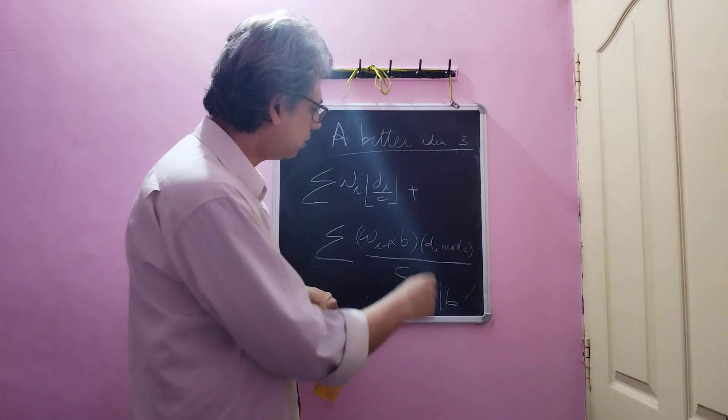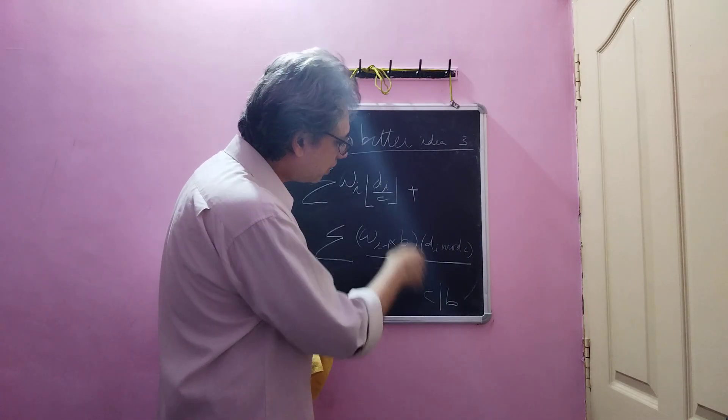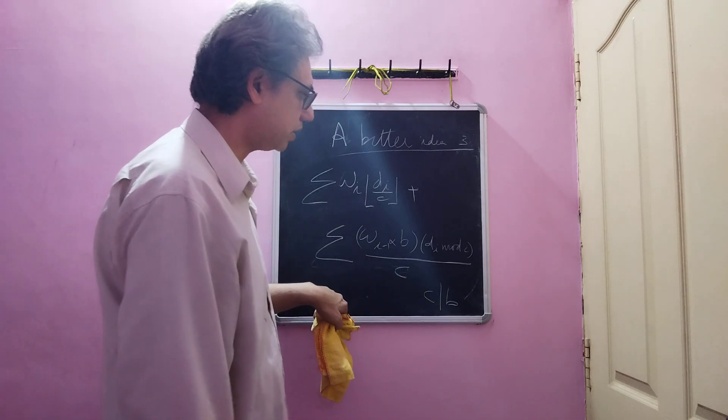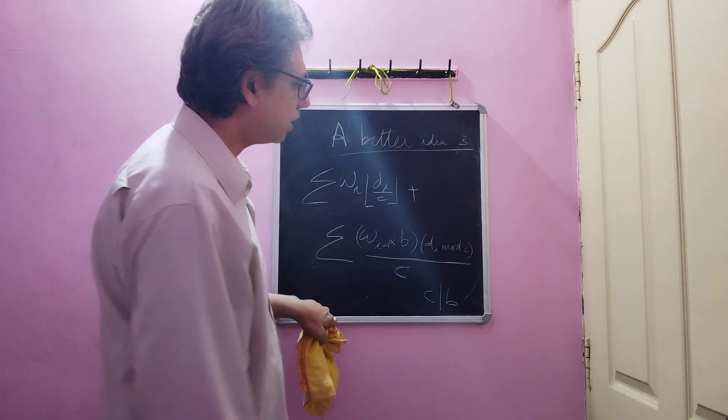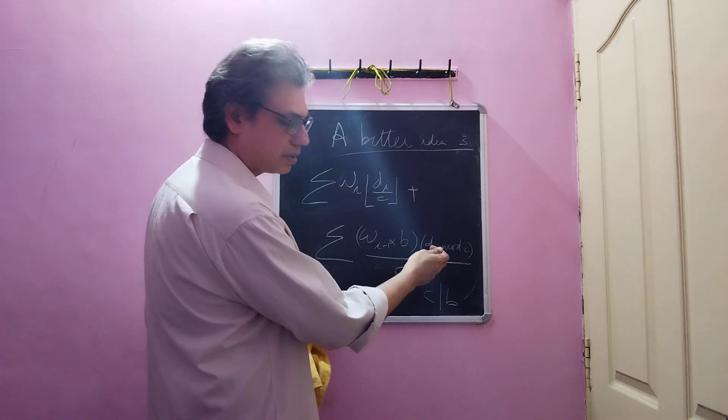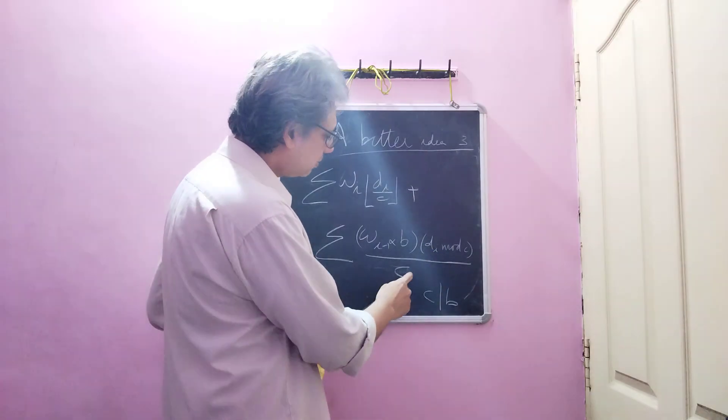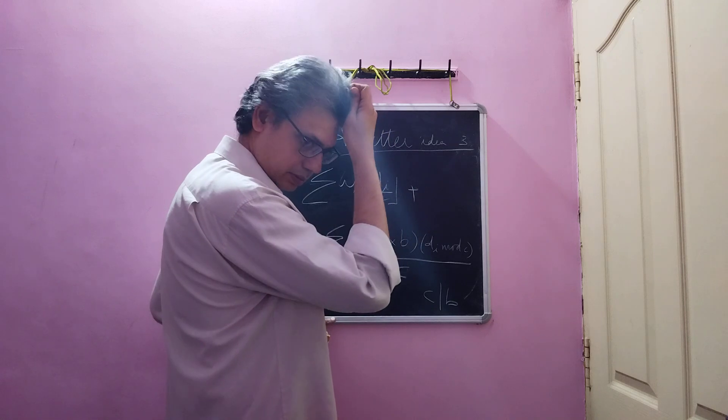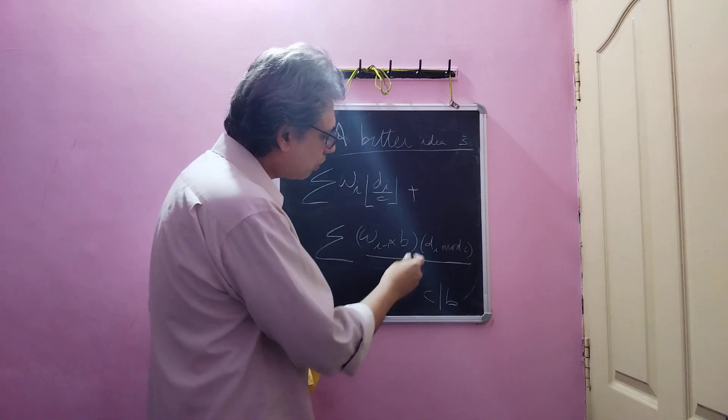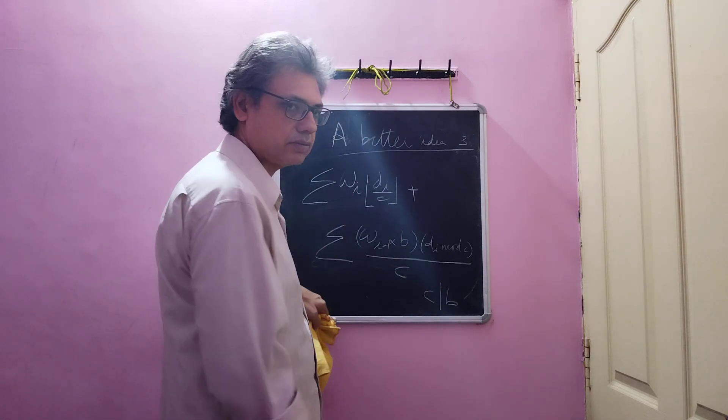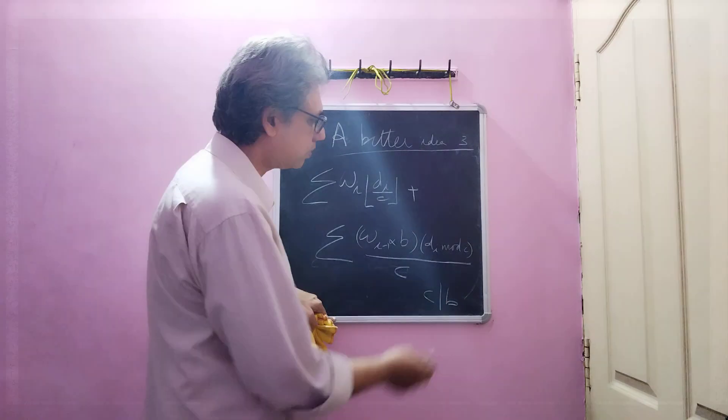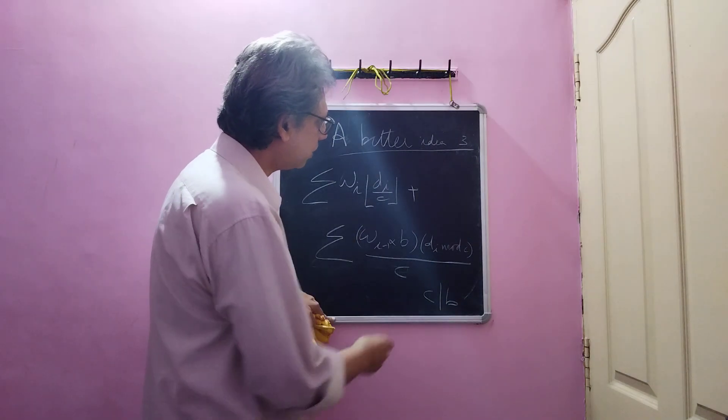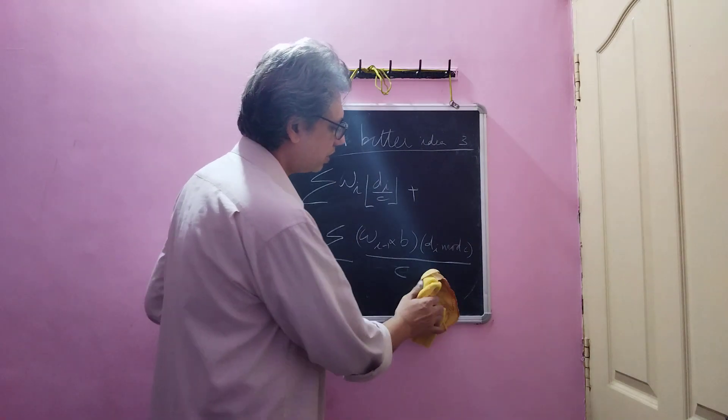So we can conveniently reduce the value by half each time. Di mod c will always be an integer. But since c divides b, therefore wi minus 1 into b mod c will not be necessary to compute. It will always be 0. So we can always compress it immediately if we take it.